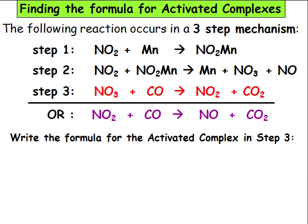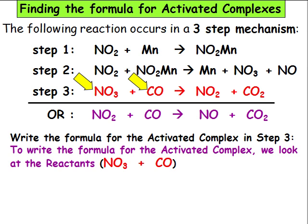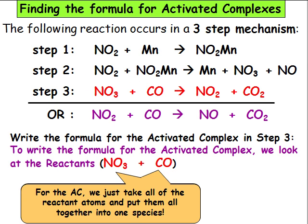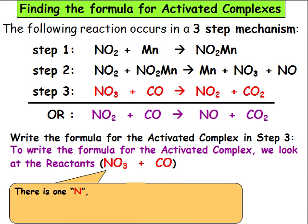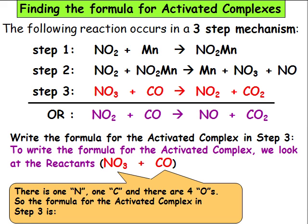Now we are asked to write the formula for the activated complex in step 3. We do this the same way as in step 2. We look at the reactants NO3 + CO. Again, we just take all of the reactant atoms and put them all together into one species: there is one N, one C, and four Os. So the formula for the activated complex in step 3 is NCO4 or NO4C.